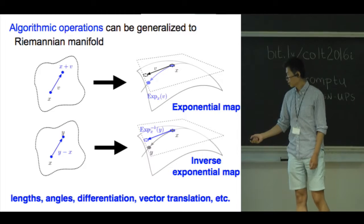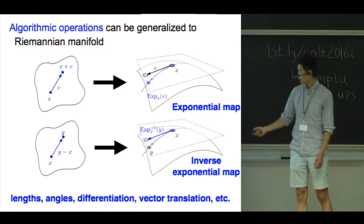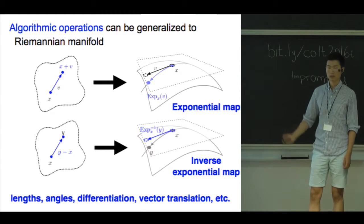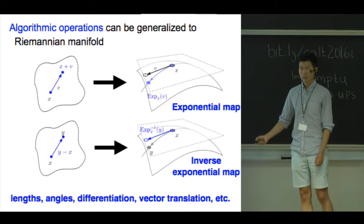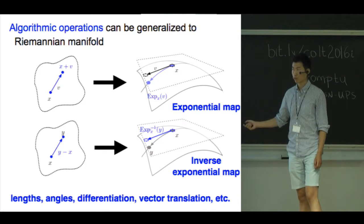Lengths, angles, differentiation, integration, gradient, subgradient, and vector translation can all be regularly defined on Riemannian manifolds. We thus know how to extrapolate a vector space optimization algorithm to Riemannian optimization.